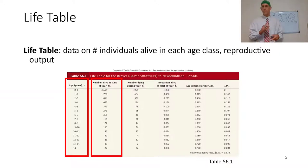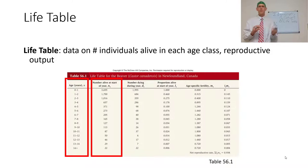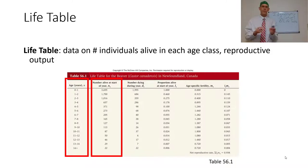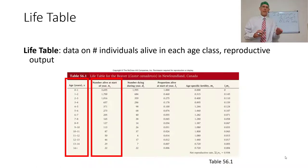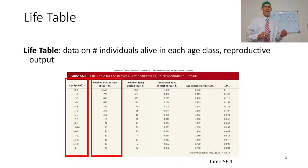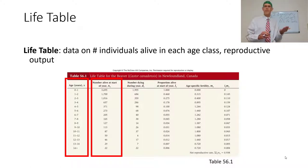The first thing you'll be calculating is n sub x — the age in years is x. So n sub 1 is the number alive at the start of year one, which is the whole cohort, every baby. Think about this in terms of beavers, perhaps.